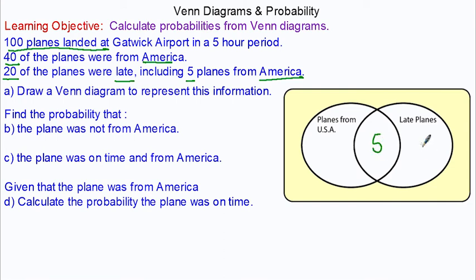Our intersection would be American and late, which is five. This means that 15 of the planes would be late but not from America, and 35 would be from America but not late.